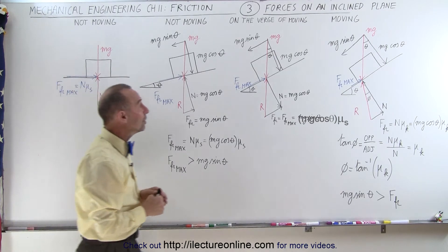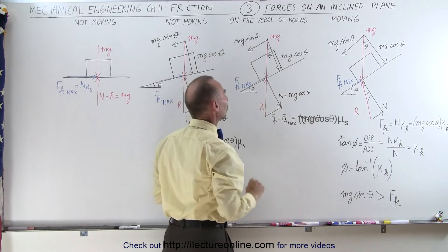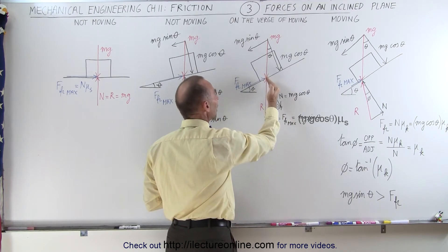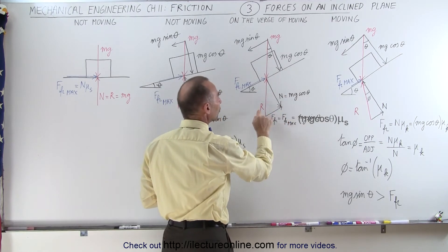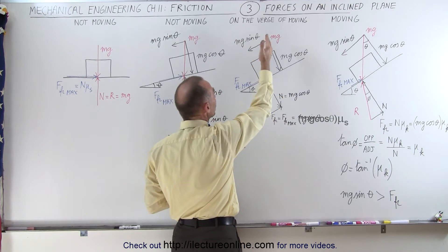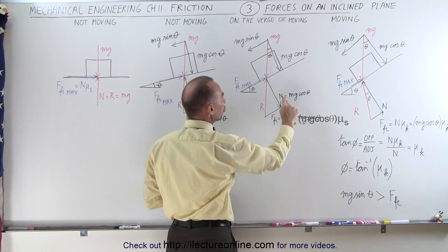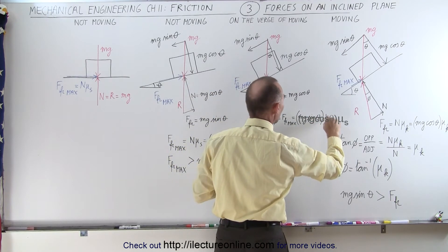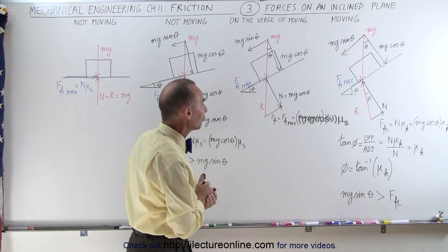What happens when we increase the angle? The component mg sine theta begins to increase, while mg cosine theta decreases a little. The normal force pushing back against the block is still equal to mg cosine theta. This component of the reaction force is becoming larger. If we're on the verge of moving, mg sine theta will be exactly equal to the maximum friction force, which is the normal force times mu sub s.